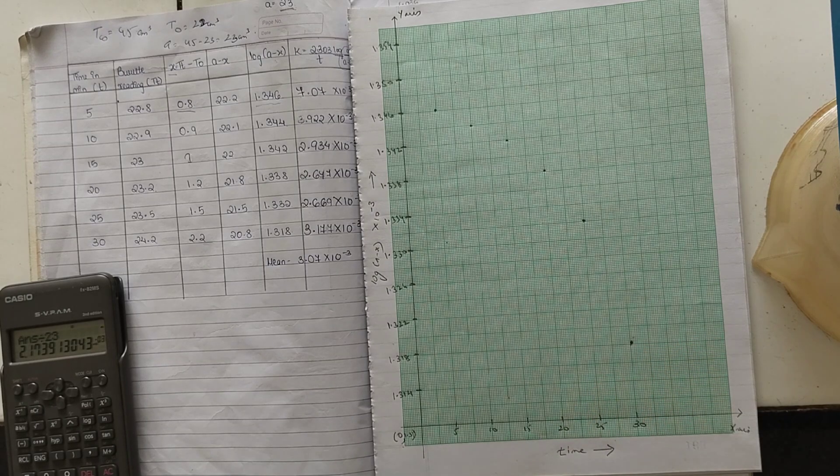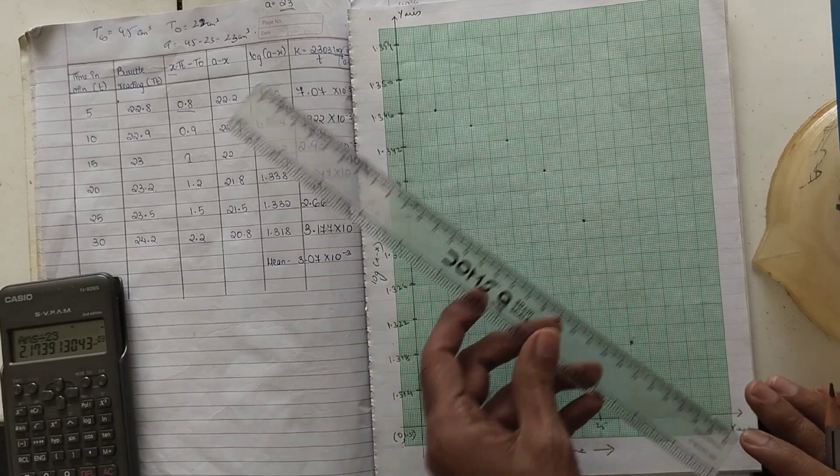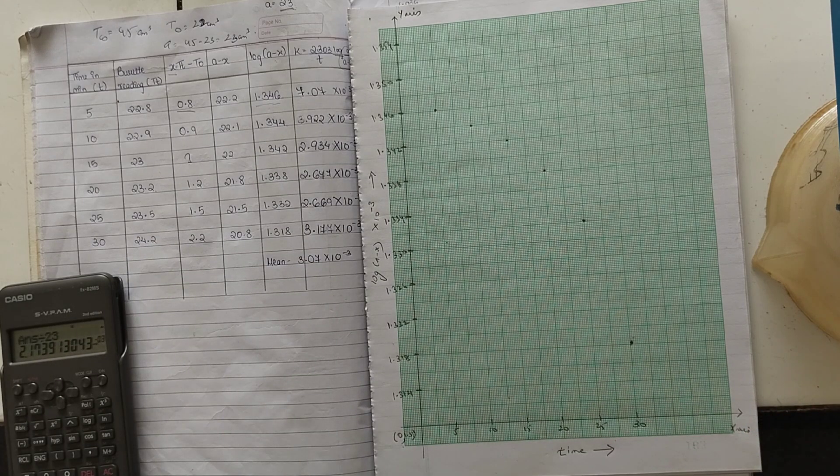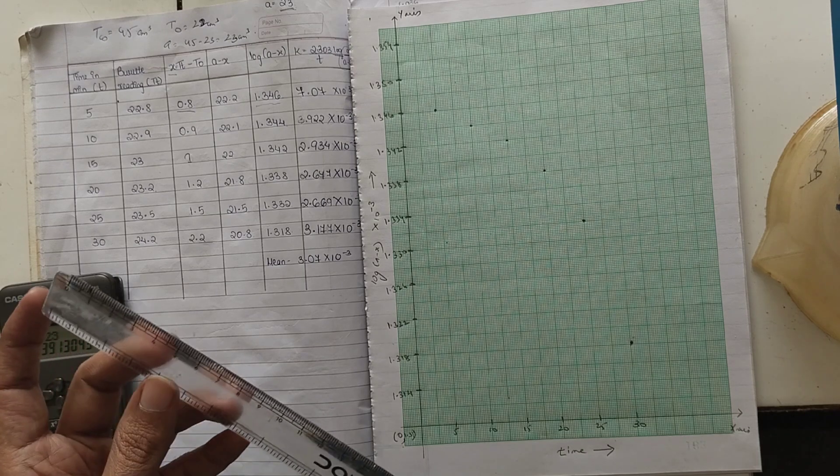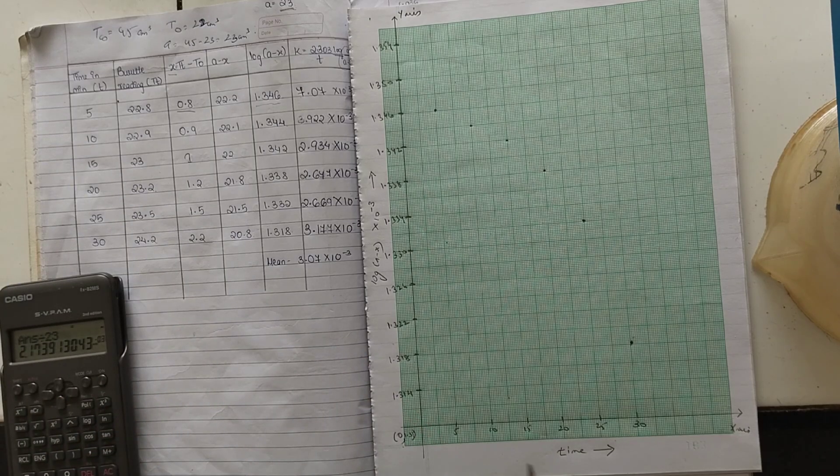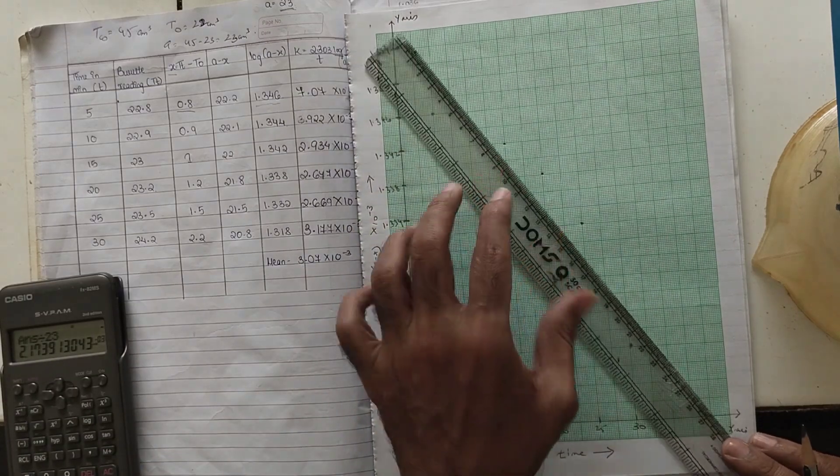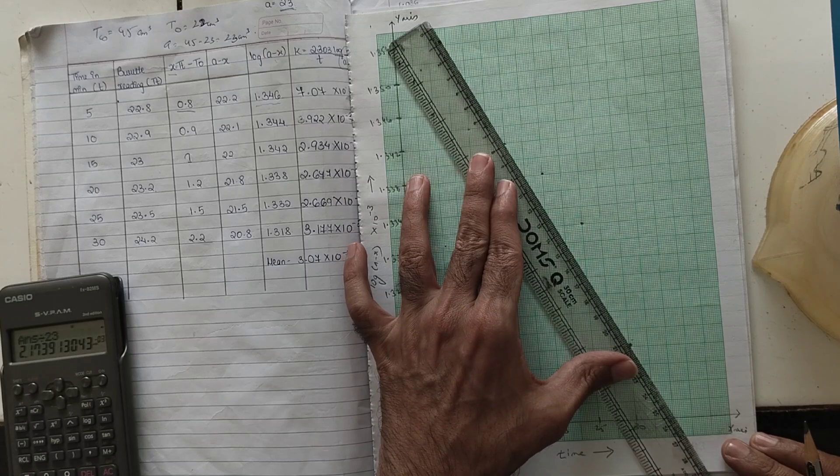For 20 we have 1.338, for 25 we have 1.332, and for 30 we have 1.318. In this way we have plotted the points. Now the next point is how to draw a line. Please remember one thing - many times students try to make sure that the line has to be drawn in such a way that all the points should be lying on that line. No, it's absolutely a wrong impression.